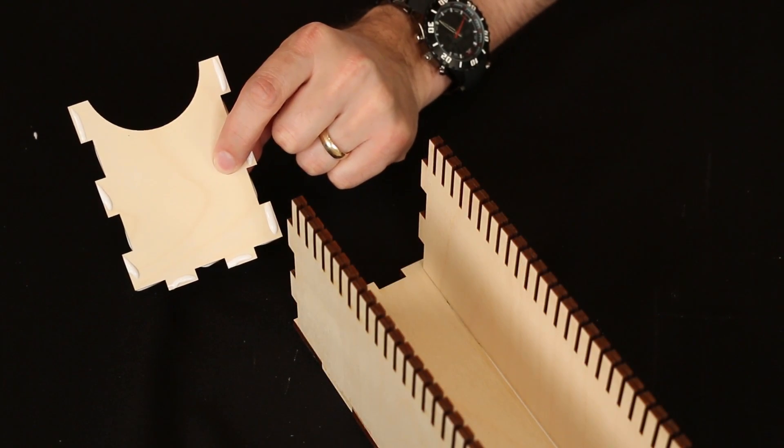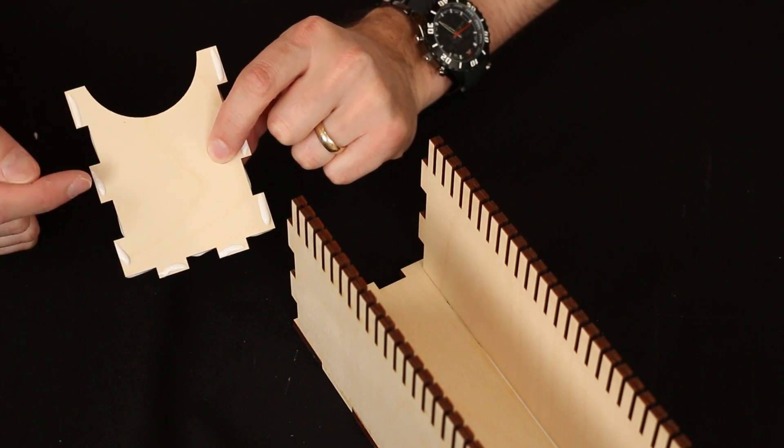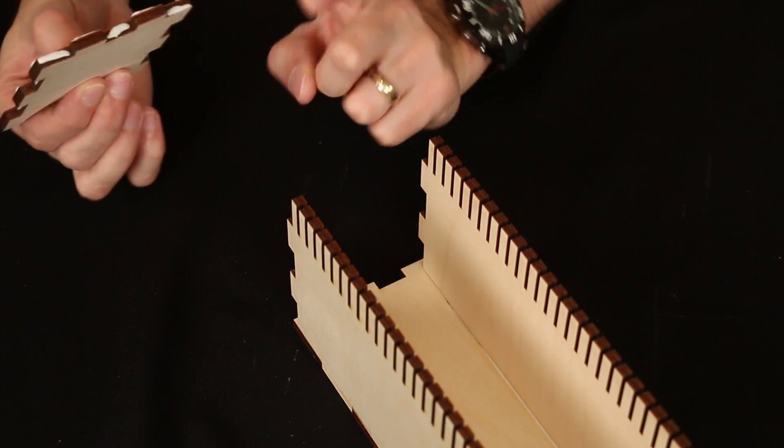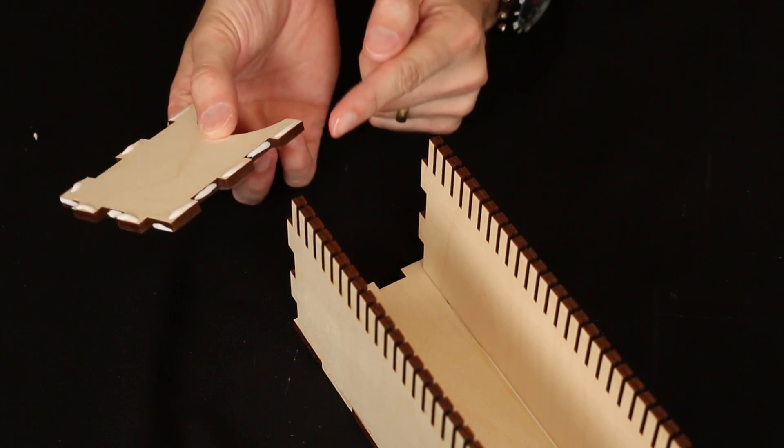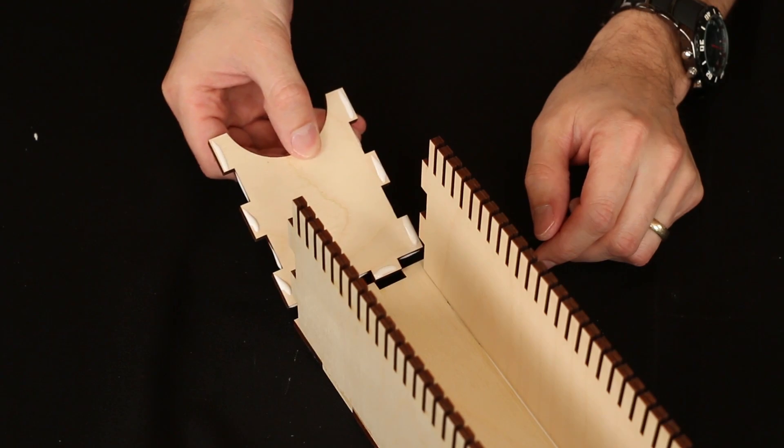The ends work the same way. They just require a little more glue because there's more points of contact. So I have a little bit of glue on all these tabs and then on all the inside grooves as well. Then you can just put it into place like so.